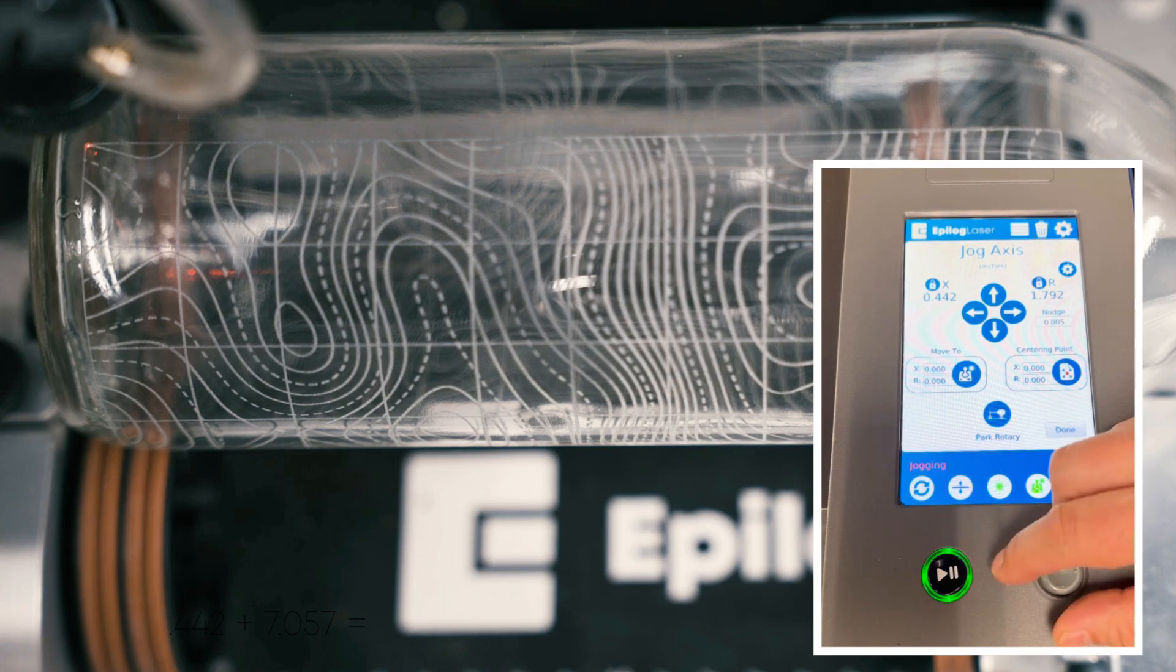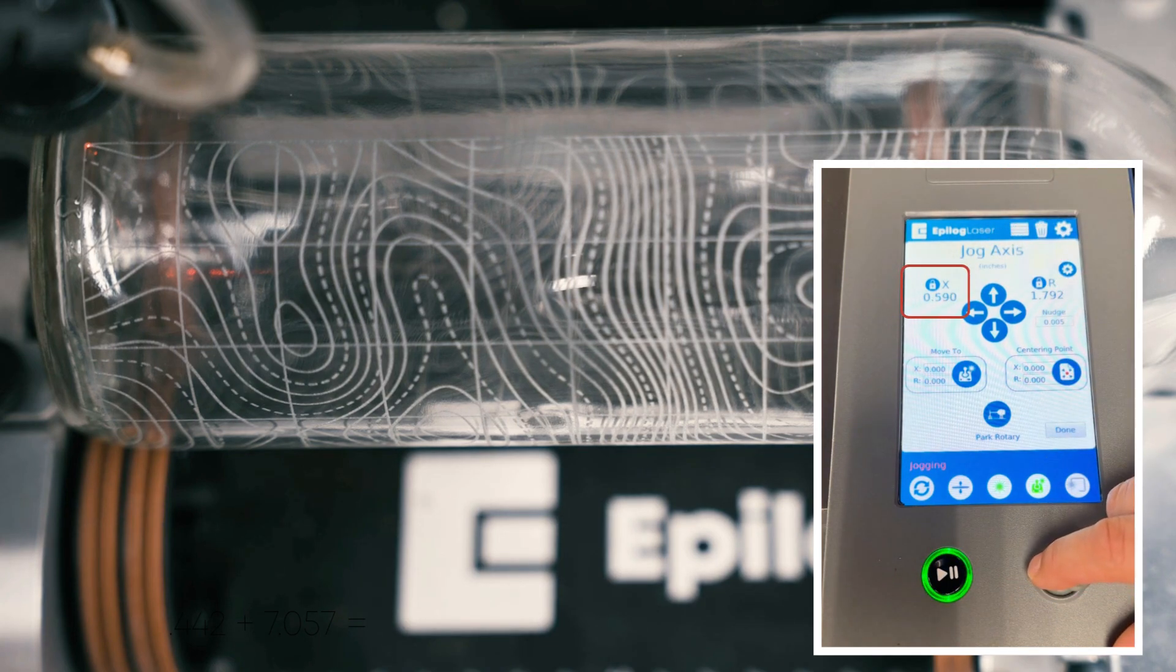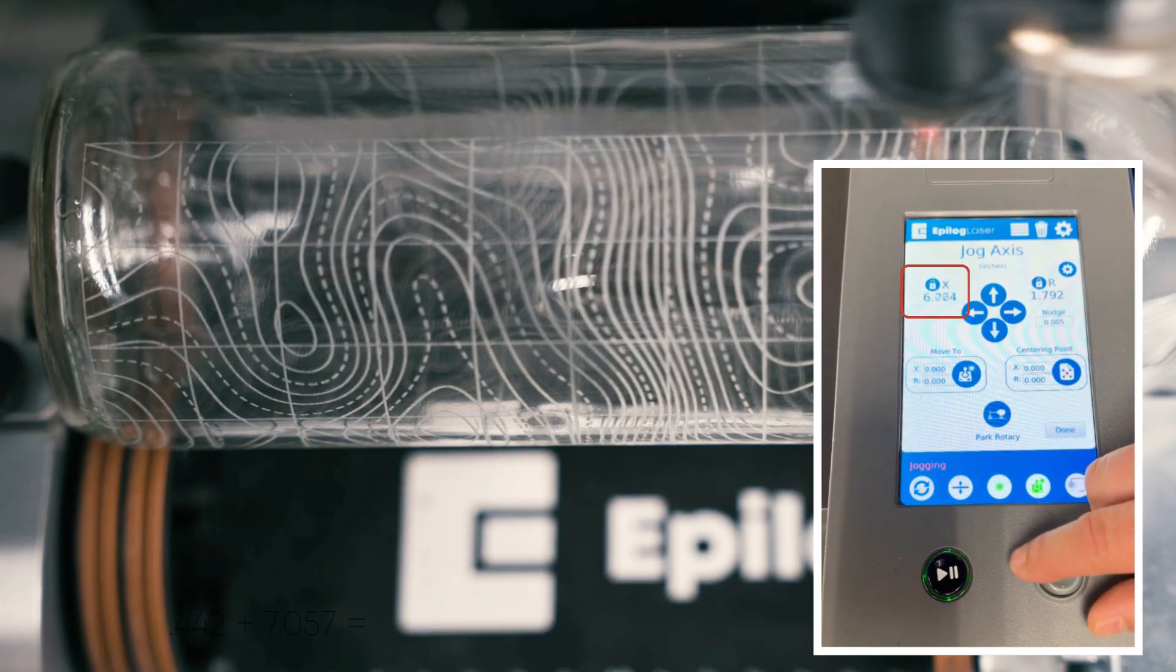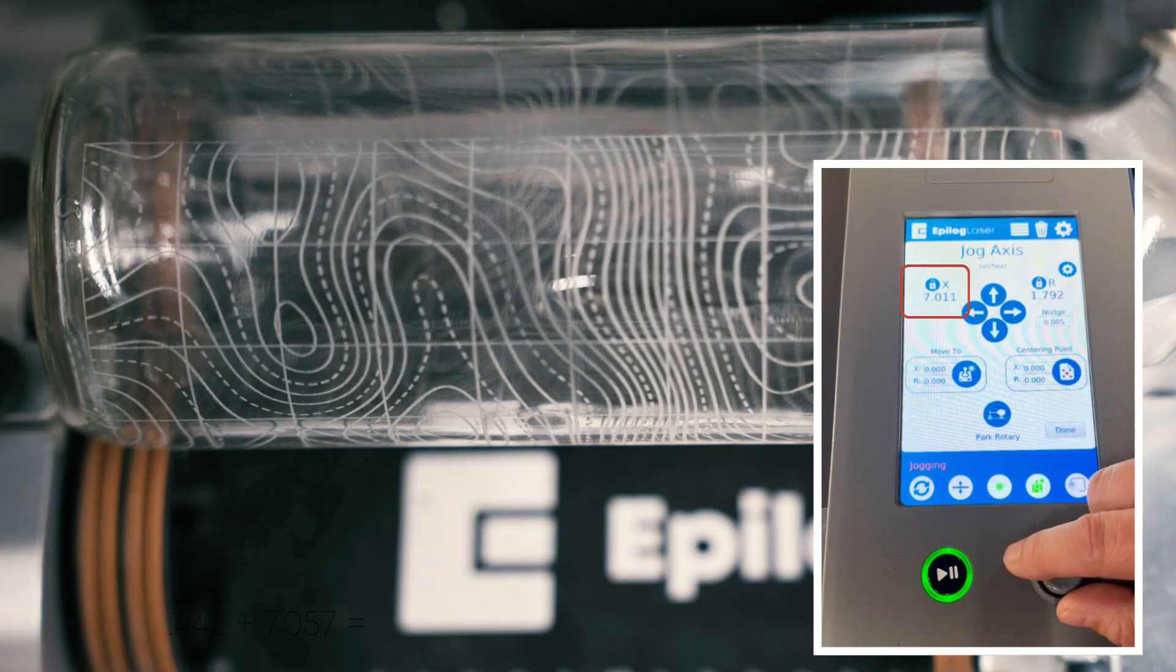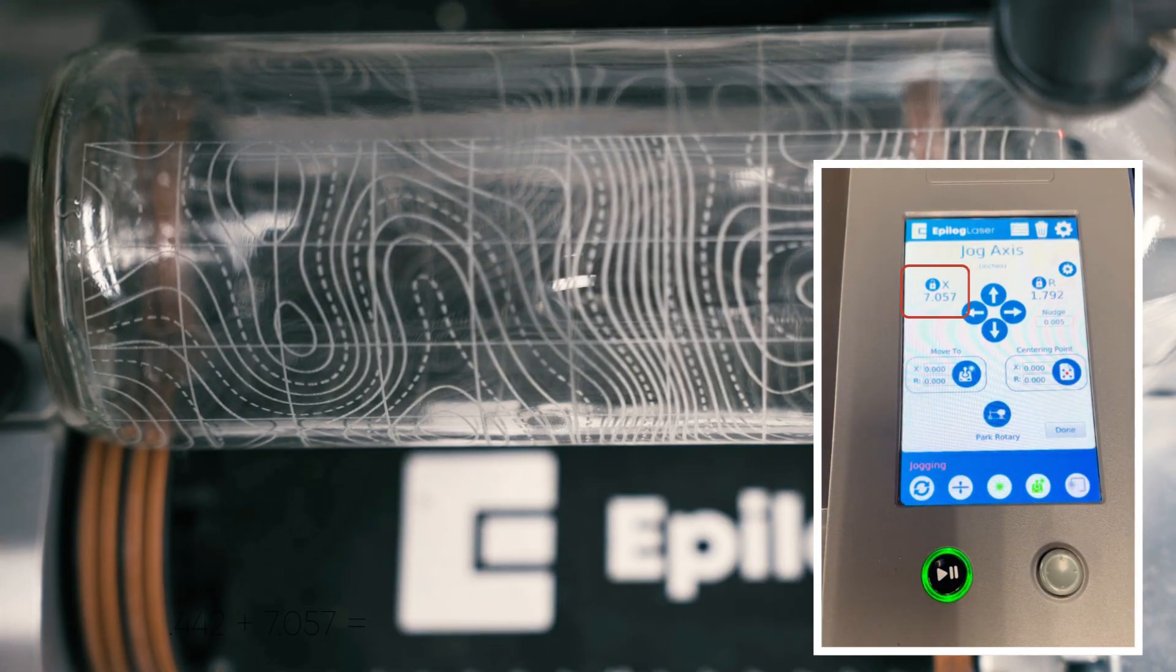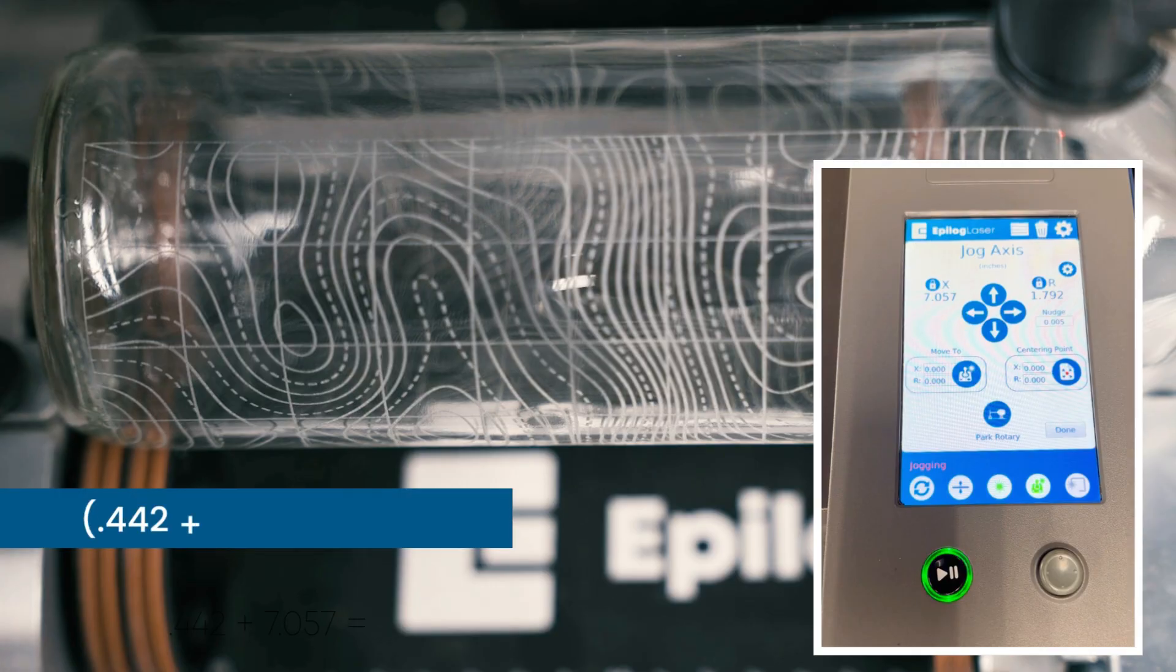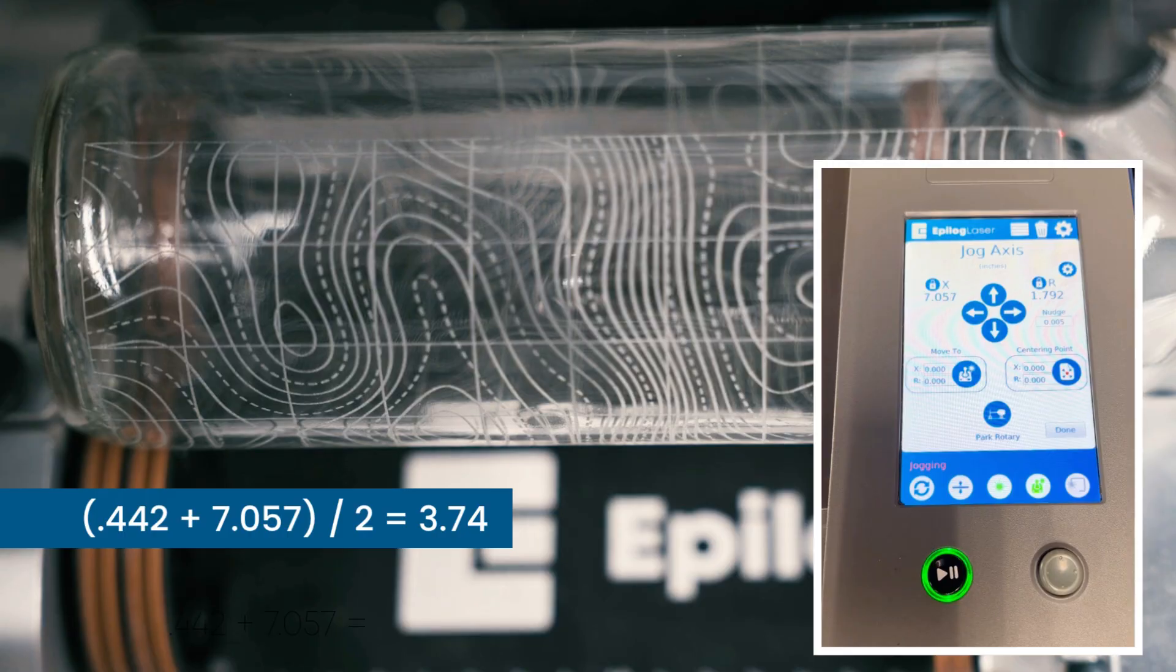So we've got that red dot pointer at the top left of the graphic that's at 0.442x. If I scroll out to the right side I can just get that right over that edge. I can see 7.057. Now what I'm going to do is add those two numbers together and then divide by 2 to find my centering point. And that comes out to 3.74.